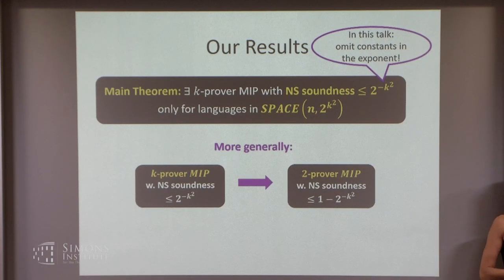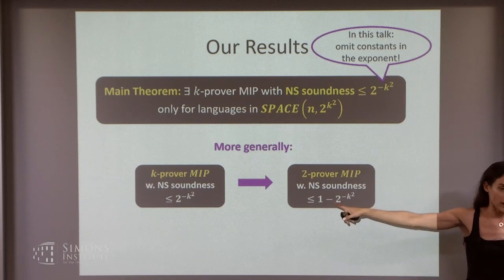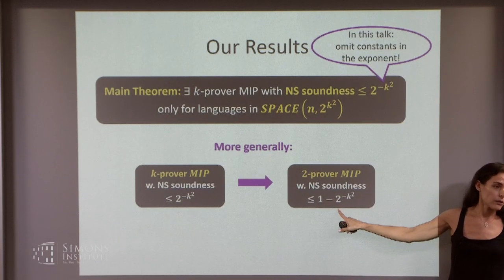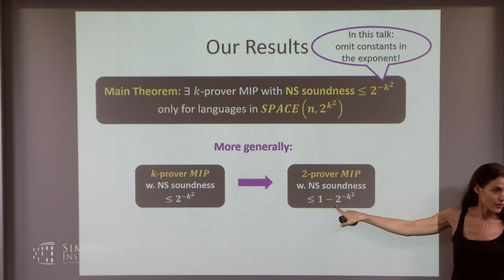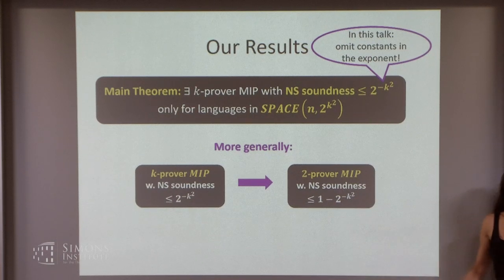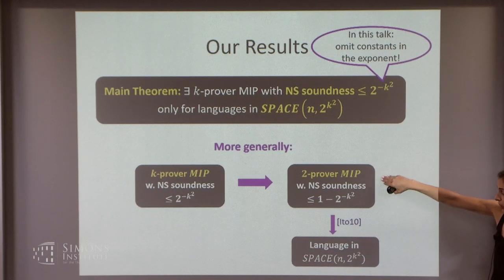Our loss is: if you start with k provers where the soundness is at most 2 to the minus k squared, when you go to 2 provers the cheater can succeed with probability up to 1 minus 1 over 2 to the k squared. In the 2-prover regime you have parallel repetition, so you can make this small, but you'll need to repeat 2 to the k squared times.